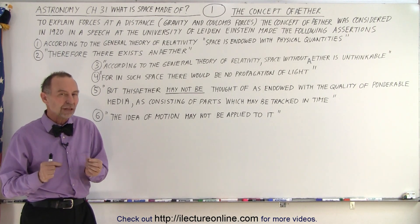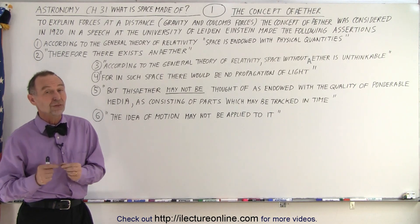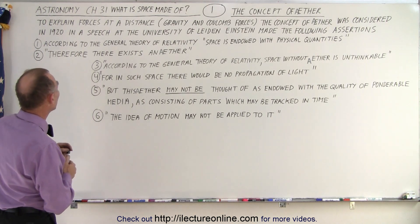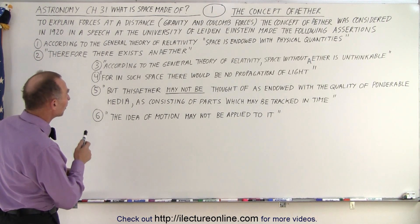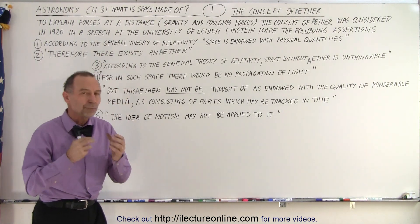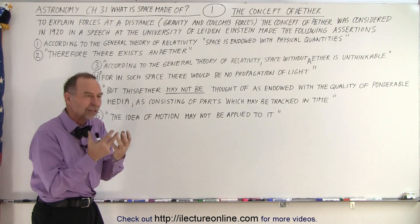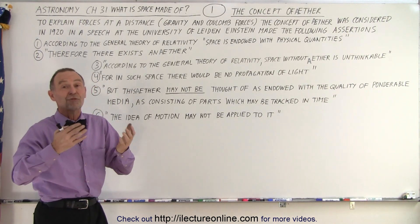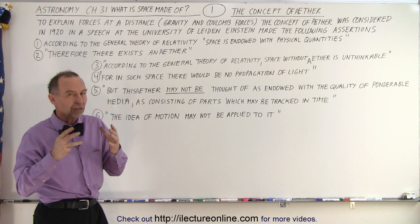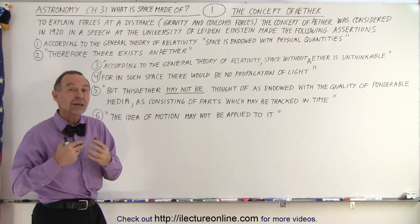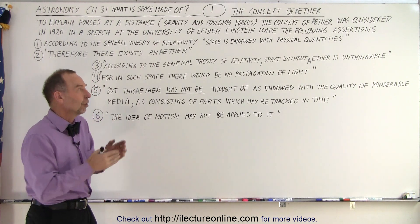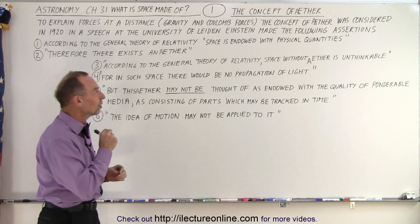So in 1920, when he made his speech, he made some very important statements. First of all, number one: according to the general theory of relativity, space is endowed with physical quantities. So space has some properties, some qualities about it that make it different from being a complete vacuum. Something affects the force of gravity, something affects the forces between electricity and magnetism, between charges. And so he says that it's space itself that allows that to happen — it has some sort of physical quantities.